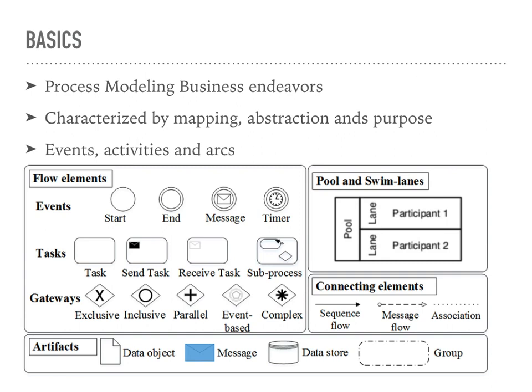A real-world example would be a wooden model of a commercial stadium being built. The commercial stadium being built is the mapping, because that's the real-world phenomenon being represented. The abstraction is the details that are omitted when using a wooden model, such as the lack of landscaping or interior electronics. And lastly, the purpose which drives the reasoning is that because it's a wooden model to show potential people how the stadium looks, it doesn't need to have internal plumbing or a life-size representation of anything.